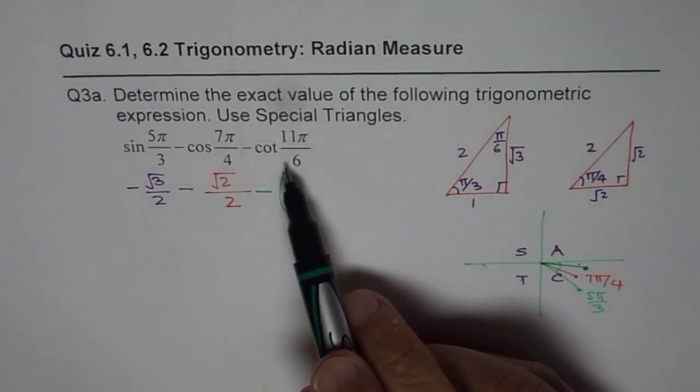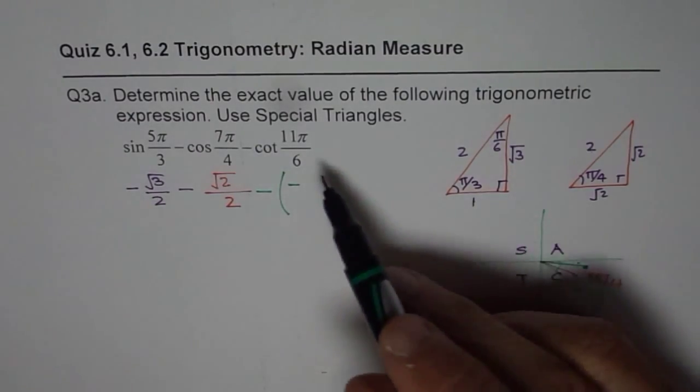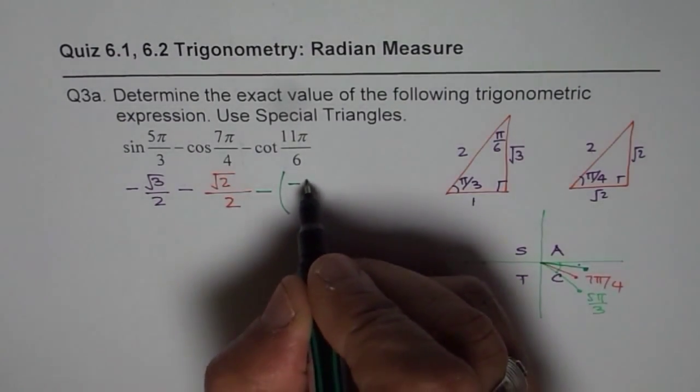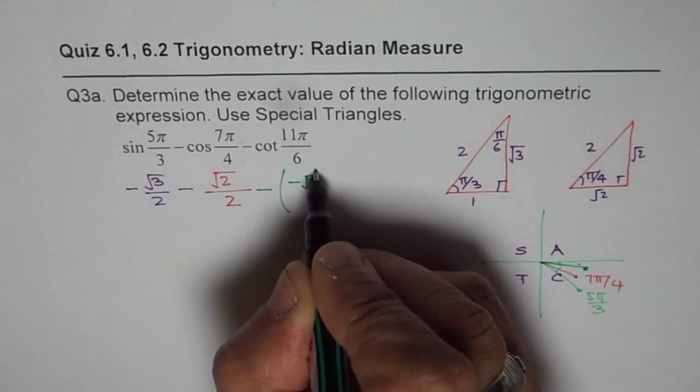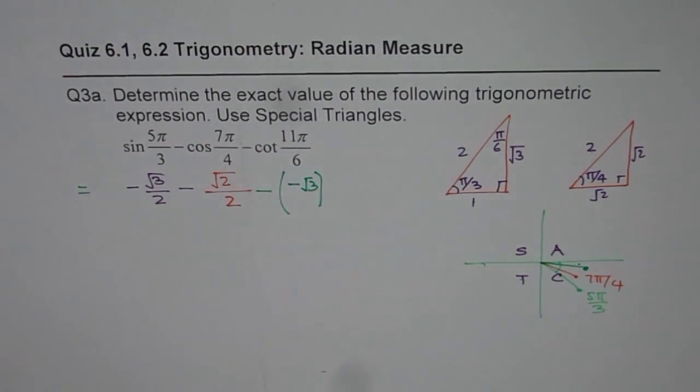Cotangent is reciprocal of tan. So, it is adjacent over opposite side. For π/6, it should be √3 over 1. So, we can write √3 here. So, that is the value for each ratio.